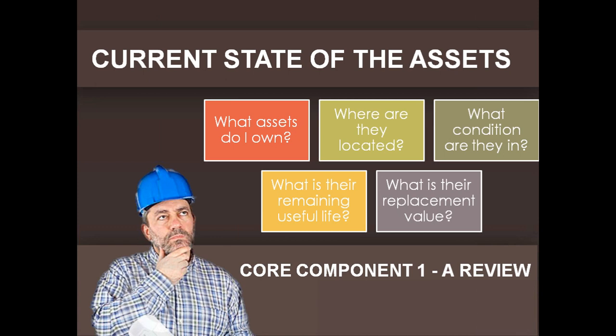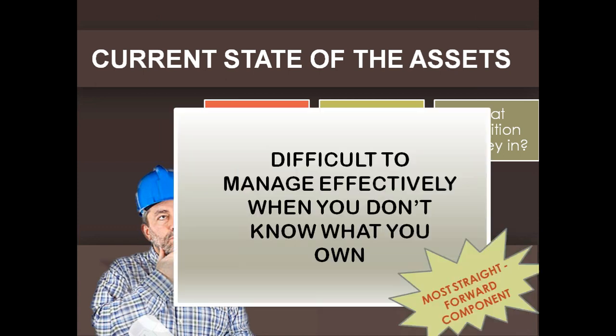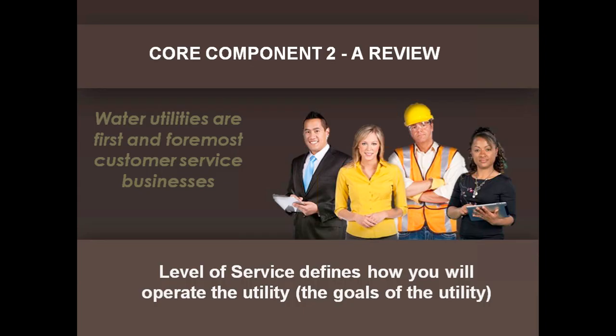In the first webinar, we talked about the current state of assets: what assets you own, where they're located, what condition they're in, their remaining useful life, and their replacement value. When you have all of those things, you know what your system owns and what condition it's in. It's difficult to effectively manage your utility if you don't know what you have. This is the most straightforward component to asset management — not necessarily the least time-consuming, but the most straightforward.